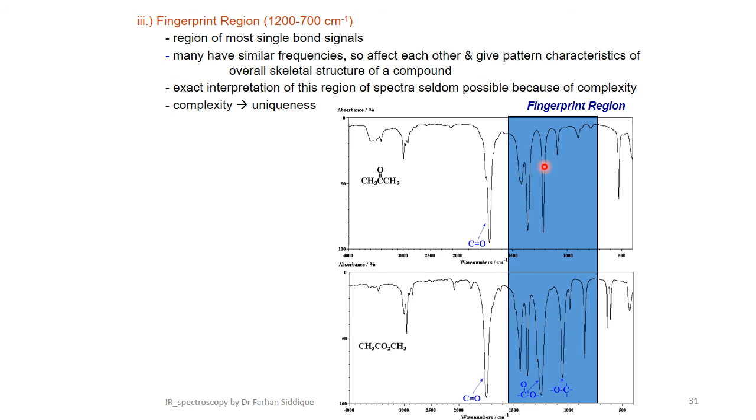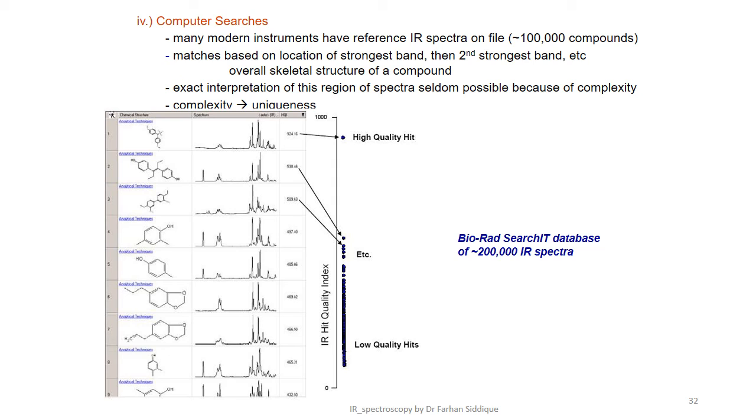Fingerprint region we also discussed before is between 400 to 1600, region of mostly single bond signals. Many have similar frequencies. Exact interpretation of this region of spectra is seldom possible because of complexity. Uniqueness in computer science, many modern instruments have reference infrared spectra on file based on location of strongest band.